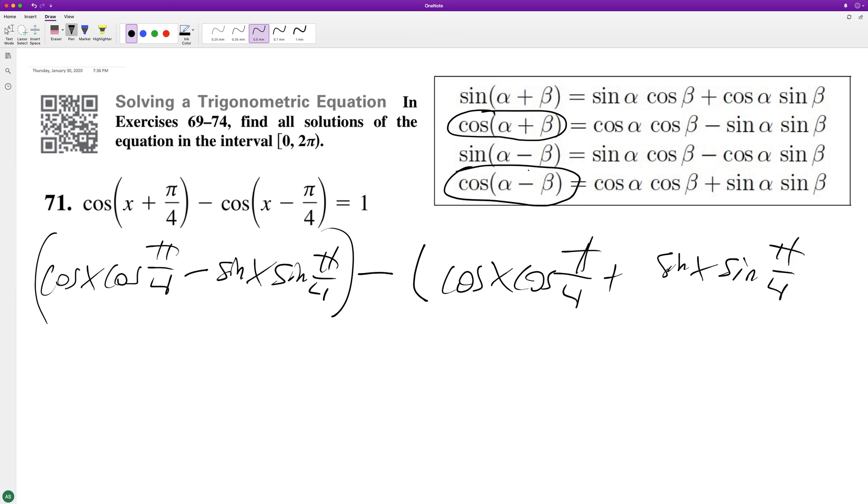So we're going to get root 2 over 2 cosine X minus root 2 over 2 sine of X, cosine of X minus root 2 over 2 cosine X minus root 2 over 2 sine X.